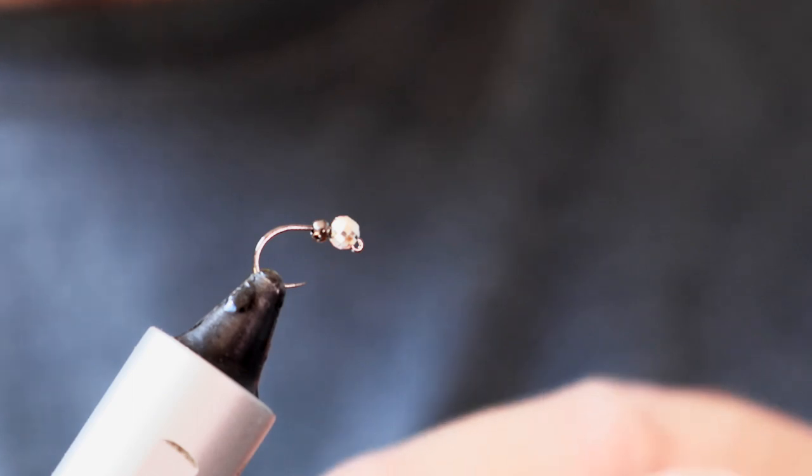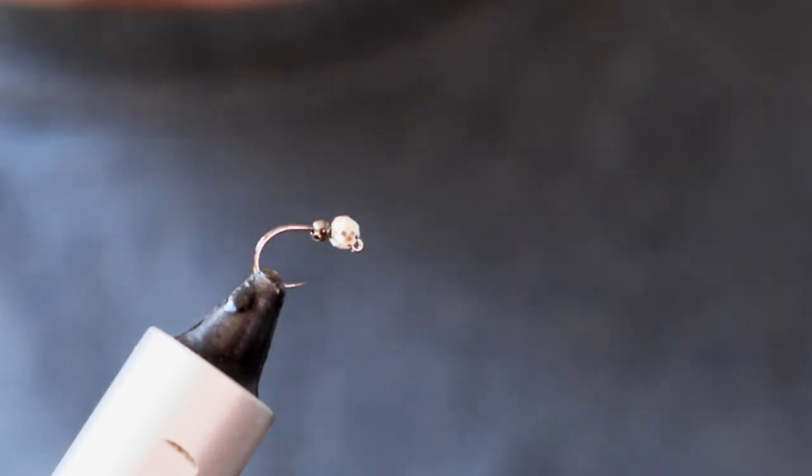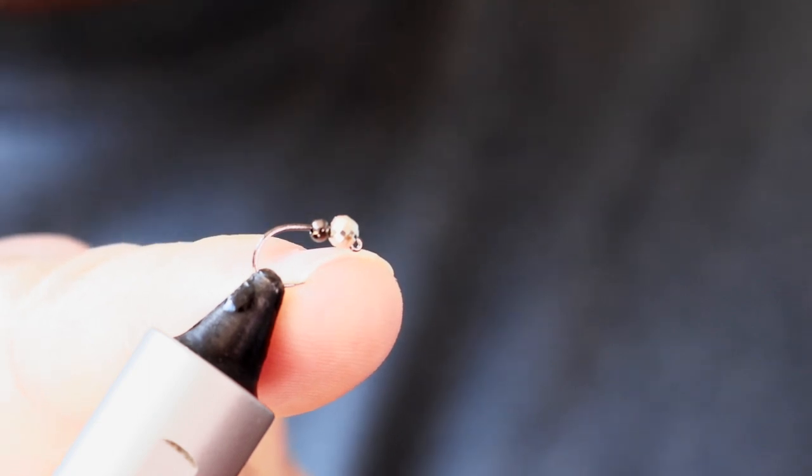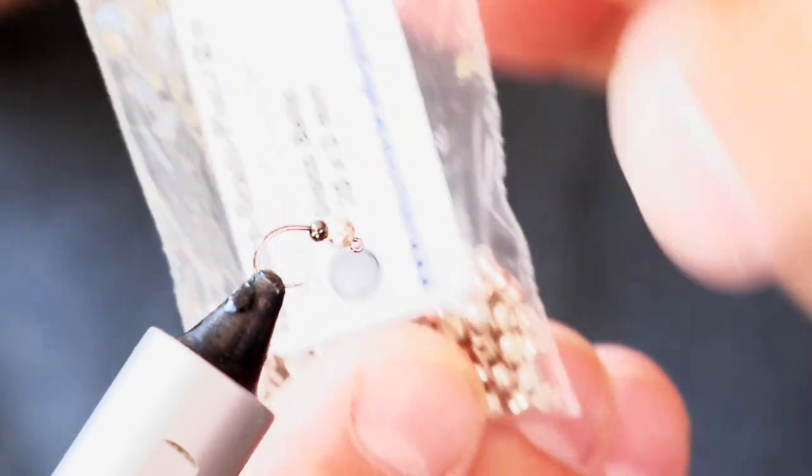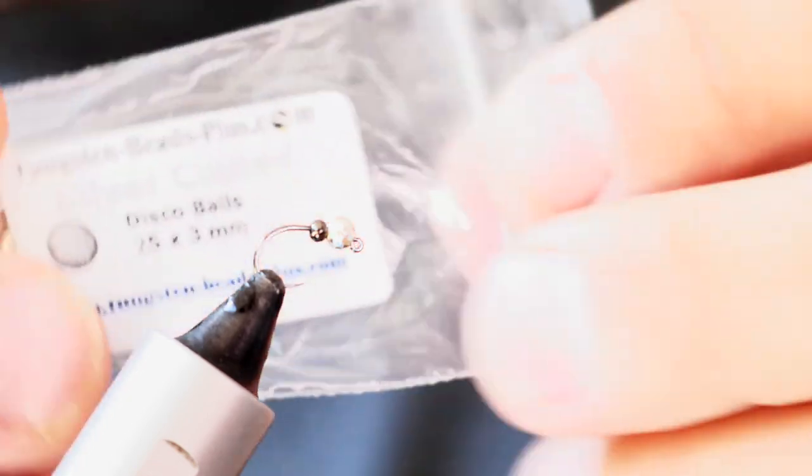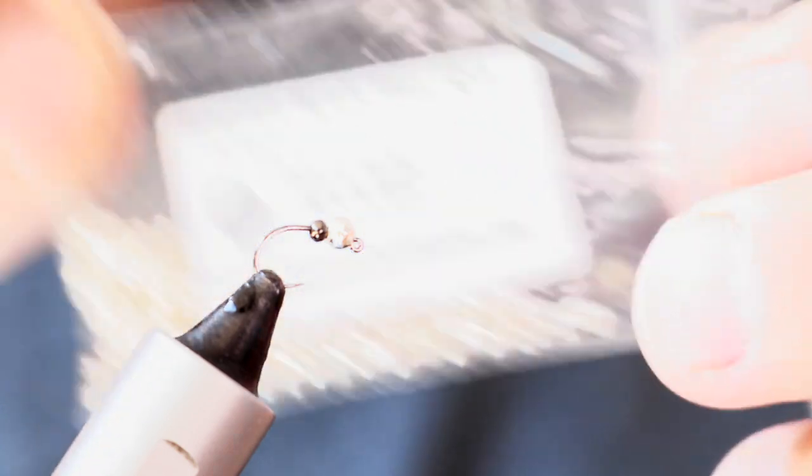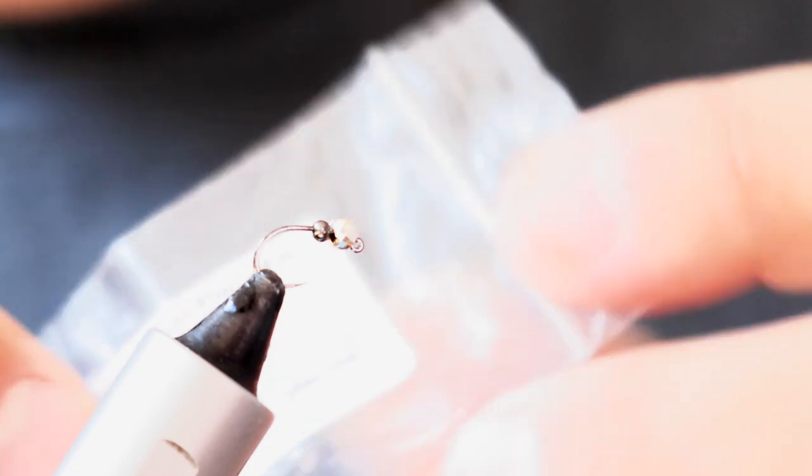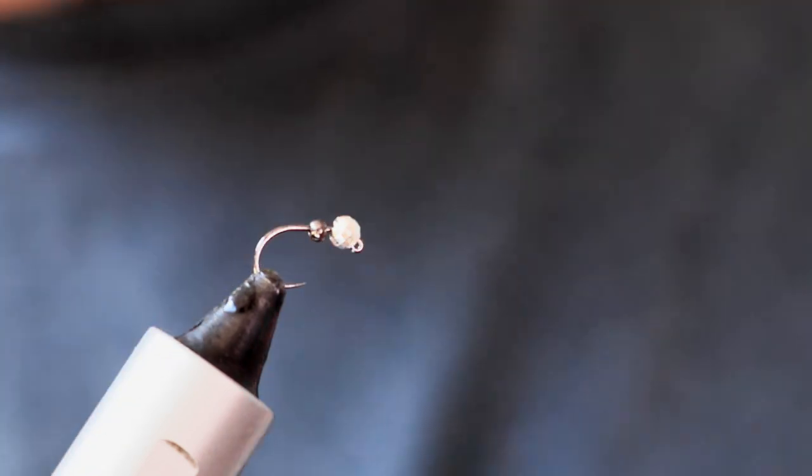But the first thing you'll notice is something very distinctive - the actual hook itself. That's the favorite jig pattern, the Hanak 450BL. This is in a size 16. I also tie this in 18s, 20s, and even smaller occasionally 22s when the mood takes me, although I don't usually have to go down that small with it. But the thing you'll have noticed straight away is the beads. There are actually two beads on the hook. The first one is a 3 millimeter silver tungsten disco bead, and then the bead that's in behind it is a black nickel 2 millimeter countersunk tungsten bead.